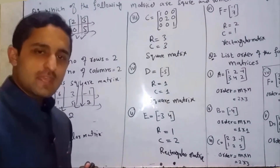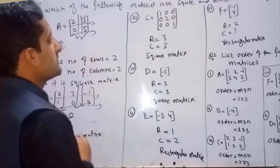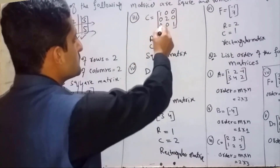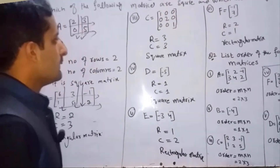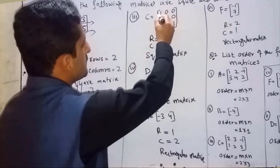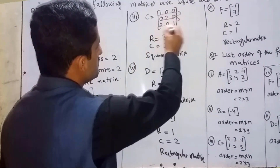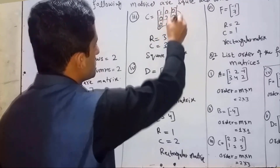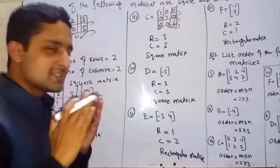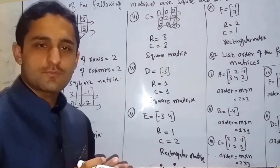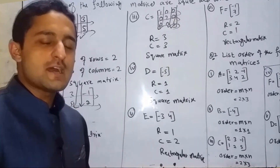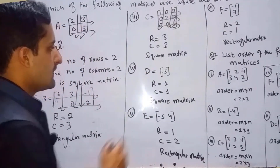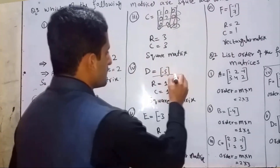Part c: C = [[1,0,0],[0,2,0],[0,0,1]]. Number of rows = 3, number of columns = 3. Number of rows equals number of columns — that is a square matrix. Part d: D = [-5]. Number of rows = 1, number of columns = 1 — it is a square matrix.